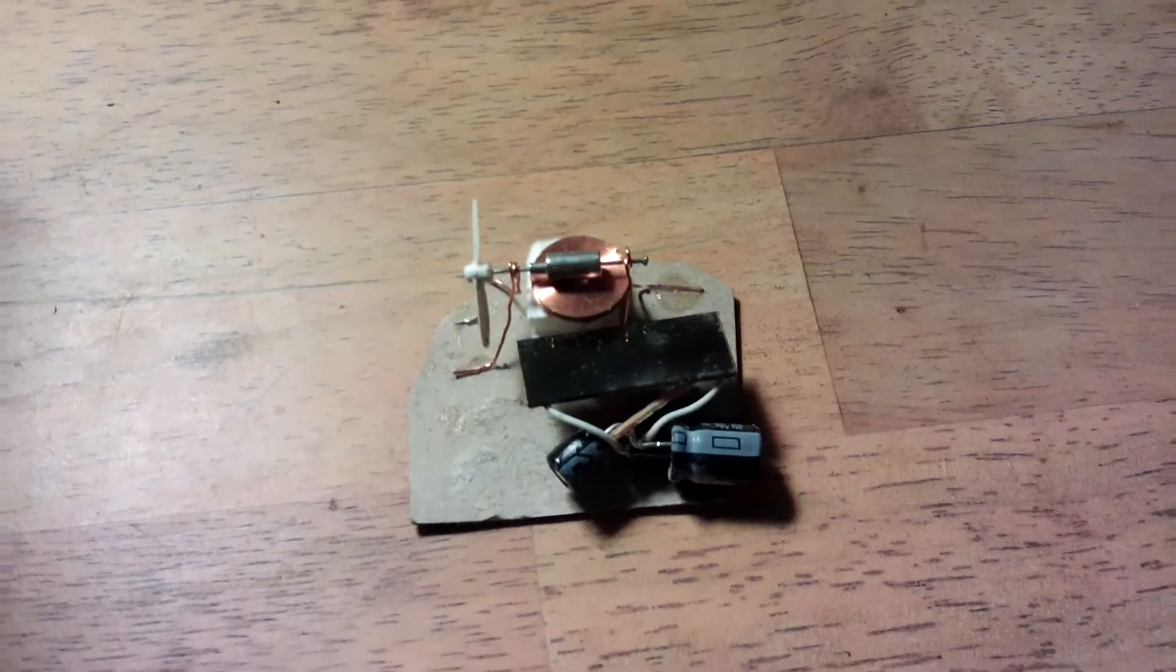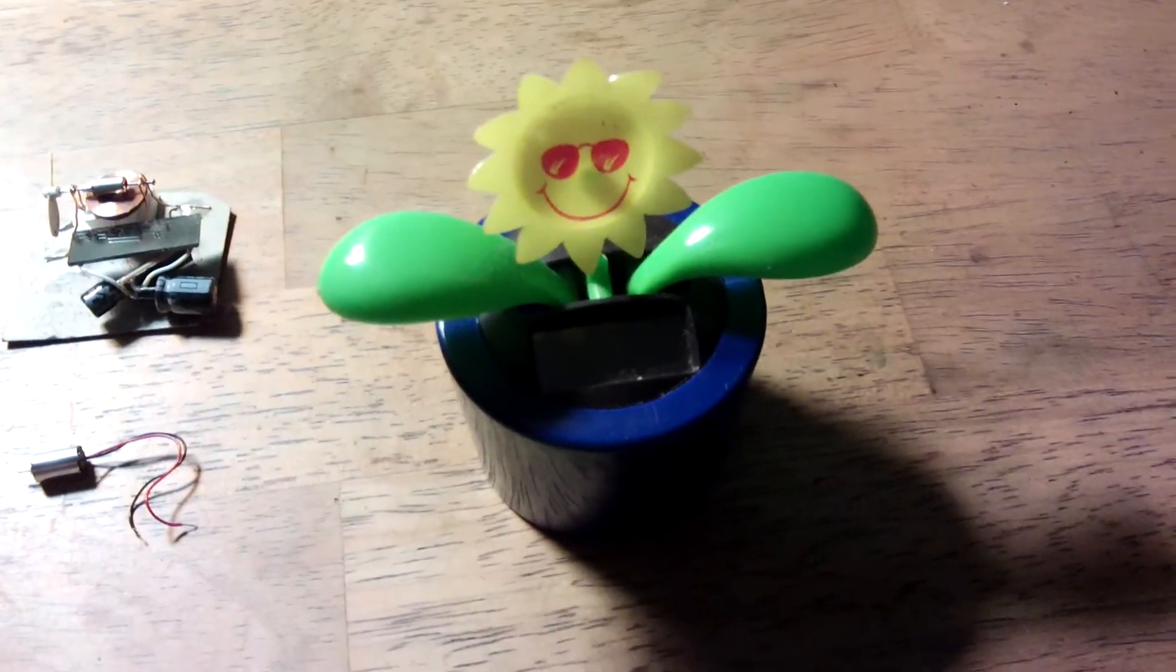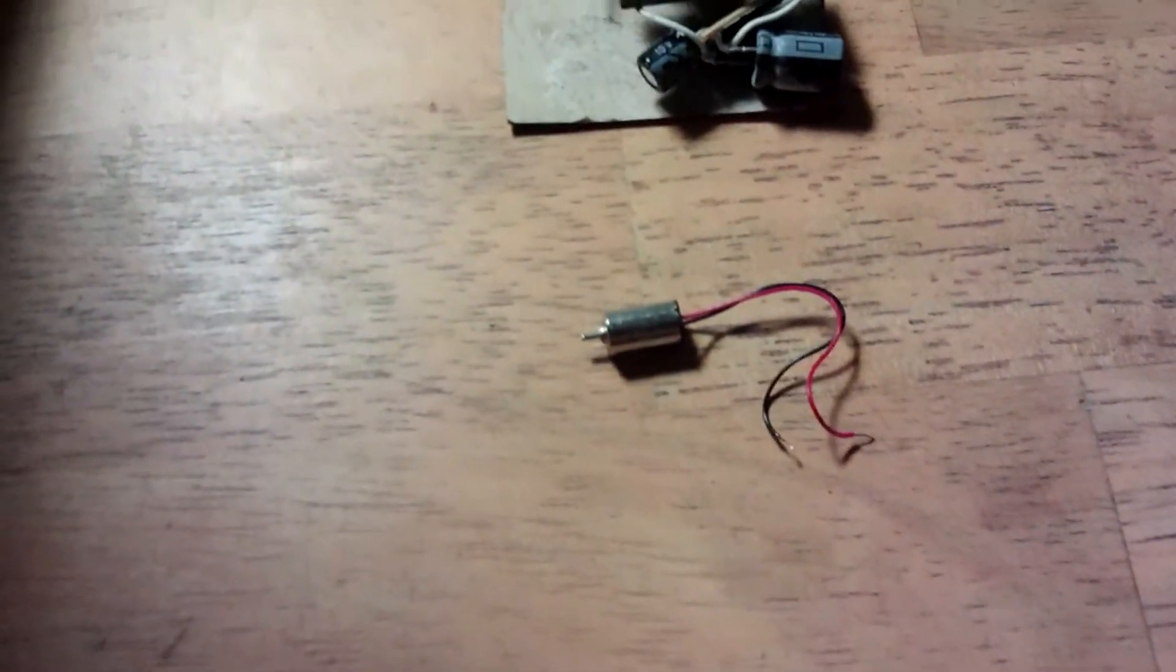It's basically just the internals from one of these dancing flowers you can get from Poundland or Dollar Tree, and then I used the magnet from the inside of one of these coreless motors.